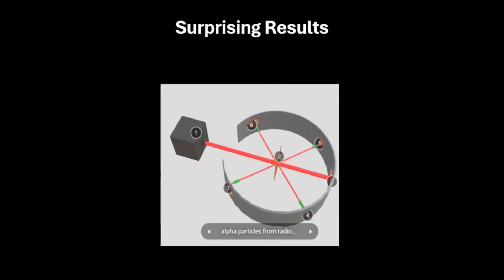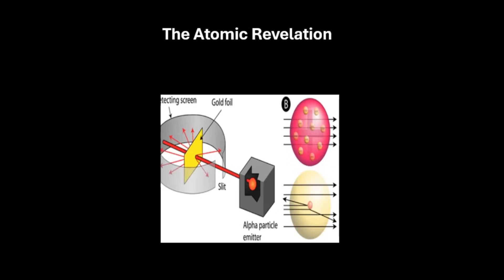Let's look at the surprising results. The results were astonishing. While most of the alpha particles passed through the gold foil with minimal deflection, a small fraction exhibited significant deflections, even bouncing back at large angles. This unexpected outcome contradicted the prevailing belief that all alpha particles would pass with minor deviations.